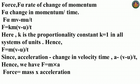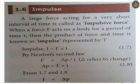F equal to k, where k is the proportionality constant; k equal to 1 in SI units. Here F equal to m of v minus u by t. Since acceleration equals change in velocity over time, v is final velocity, u is initial velocity, divided by t. Therefore F equal to m times a. Here we have F equal to m times dv/dt. Impulsive force.